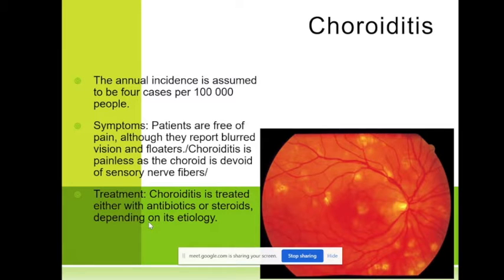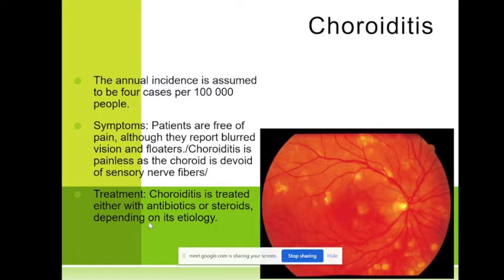If the problem is in the macula and fovea, visual acuity decreases and the patient comes to us immediately. But if it is in the periphery, the patients may not know they have chorioretinitis.